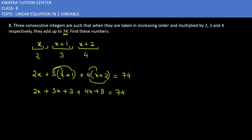2x plus 3x plus 4x equals 9x. Then 3 plus 8 equals 11, so we have 9x plus 11 equals 74.